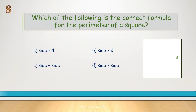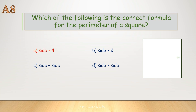Which of the following is the correct formula for the perimeter of a square? Correct answer is A, side times 4.